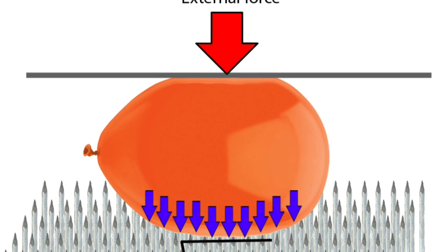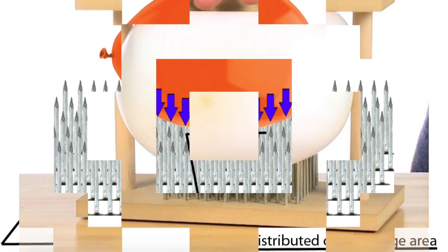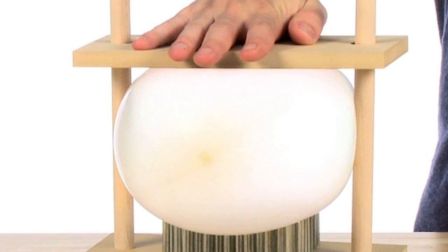The reason why this happens is when you pop one balloon with one pin, all of the pressure is concentrated on only one point of the balloon, so it easily pops. But if you have a lot of pins, they're evenly distributed on the balloon, so it won't pop.